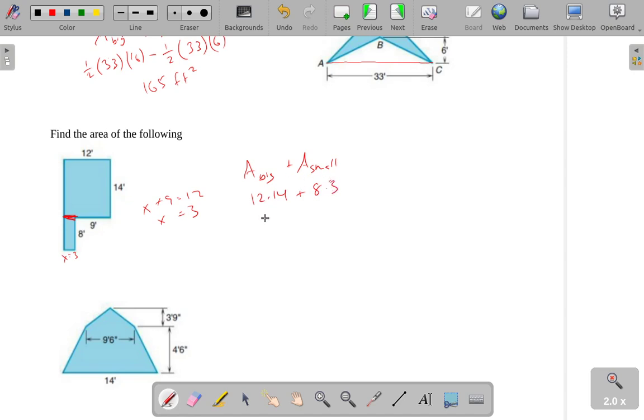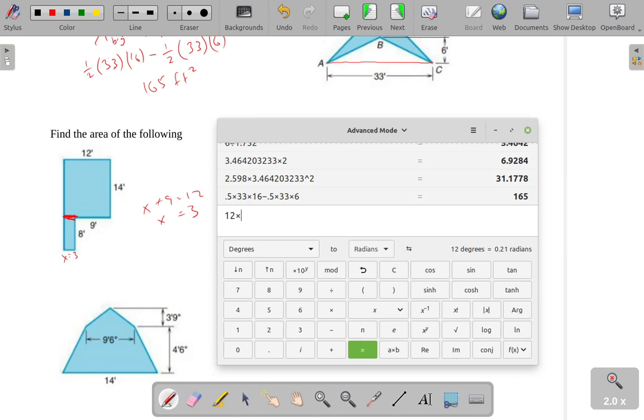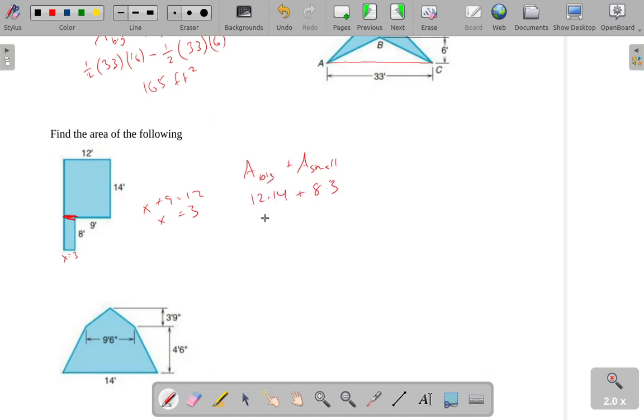So we get 12 by 14 plus 8 by 3, which is 192. Everything here is in feet, so this would be 192 square feet.